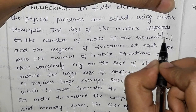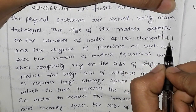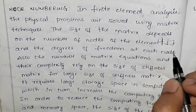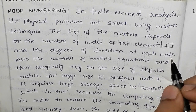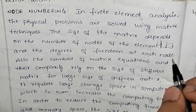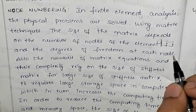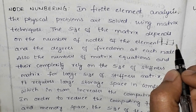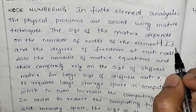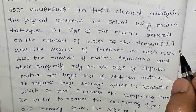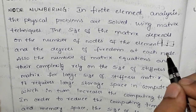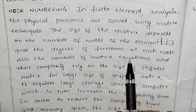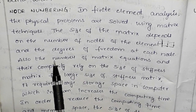For example, with two elements, the number of nodes would be three. So with three nodes, the number of nodes determines the matrix size. For example, with three nodes, the final matrix size would be a three-by-three matrix. So depending upon node numbering, the element size can vary, and that also includes the degree of freedom at each node.